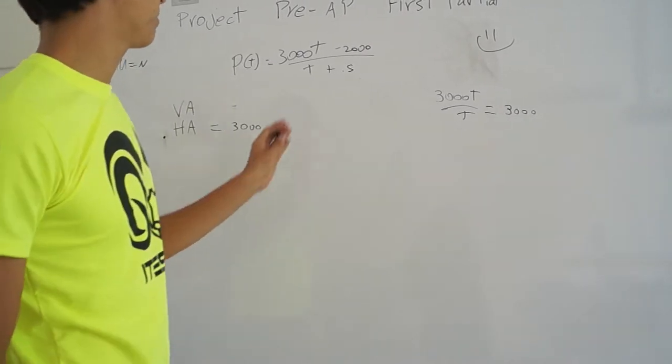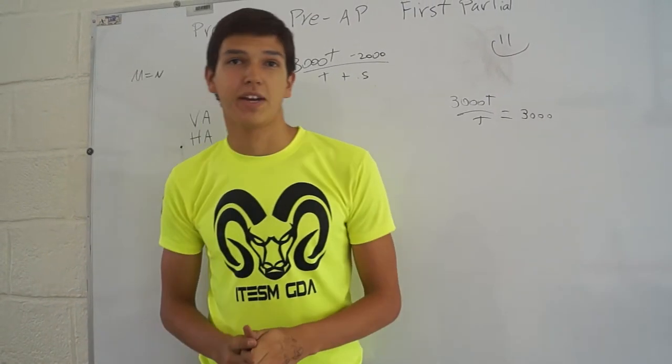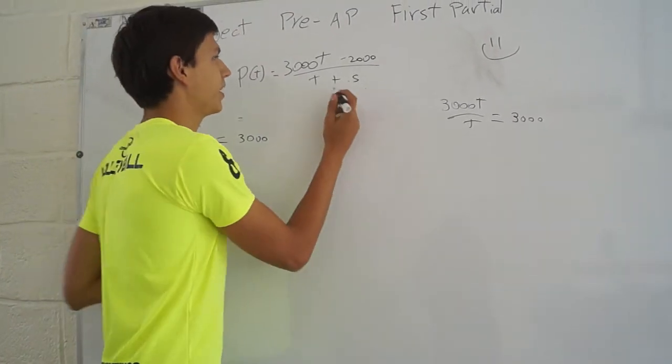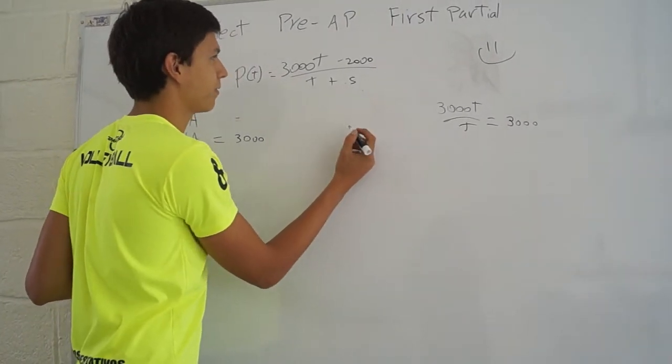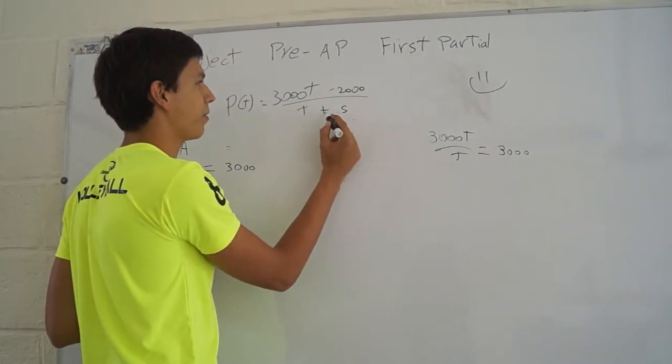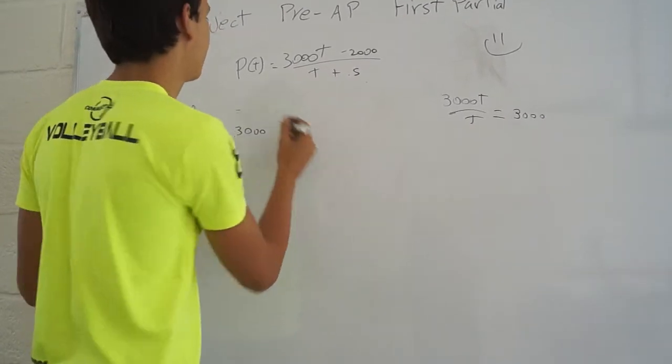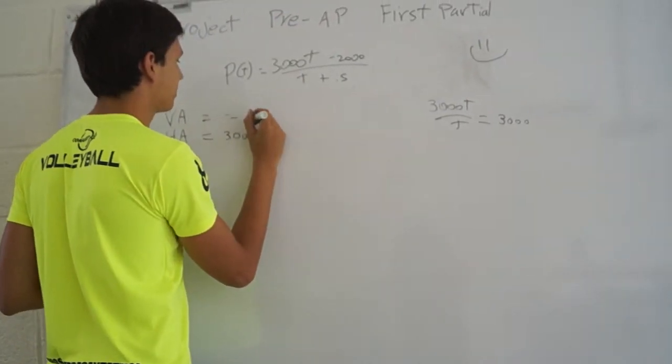And for the vertical asymptote, the denominator cannot be zero, or we have undefined. It can be minus 0.5. Because if T is minus 0.5, the denominator will be zero. So we have another asymptote at minus 0.5.